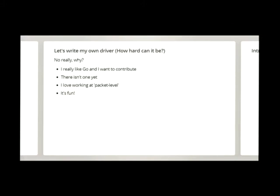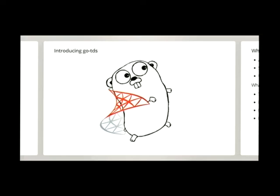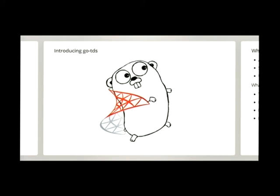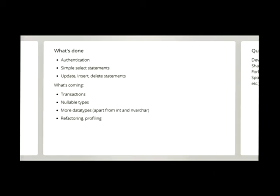And if I could contribute to Go. And like I said, I would love working at the lower level. The packet level and stuff. So, introducing GoTDS. For those of you who are not familiar with the Microsoft SQL Server logo, it looks like this. So that's where it fit really well. What's done at the moment is I can authenticate with the server. Not encrypted yet. That's coming. I can do simple select statements on integers and varchars, so strings. I can do update, insert, and delete statements. Parameterized.